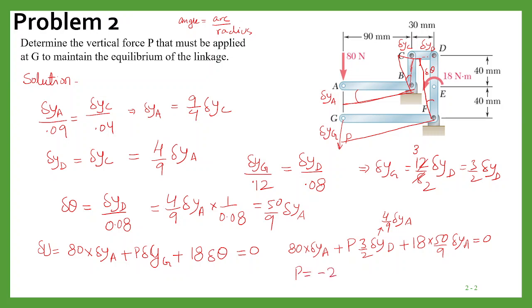So minus means this P will not act in the downward direction, but actually it will act in the upward direction, so this is the final P, and its magnitude is 270 newton.